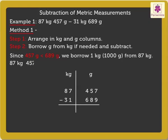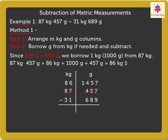Hence, 87 kilograms 457 grams is equal to 86 kilograms plus 1000 grams plus 457 grams, which equals 86 kilograms 1457 grams. Now, subtract the grams and kilograms in the respective columns.